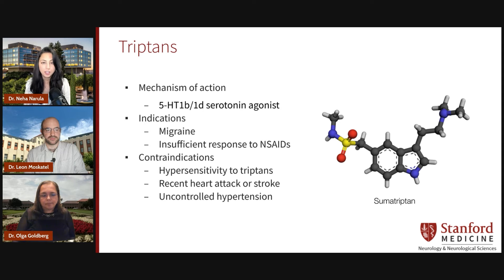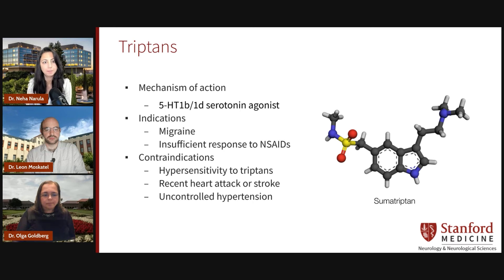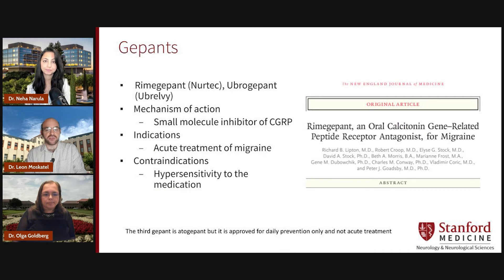That makes total sense. So for patients in these groups, what do you recommend that we do or prescribe? Instead of triptans, there are newer classes of medications that work through a different mechanism that we can use in these situations. These other treatment options are the G-Pant class of medications, Lasmitidan, and external devices. The G-Pants are small molecule inhibitors of calcitonin gene-related peptide that arrived on the market beginning in 2019. There are currently three options with near-equivalent efficacy: Rimegepant, Ubrogepant, and the recently approved Atogepant. They can be very helpful options for patients to treat an acute migraine, and like triptans, are best taken at the onset of the headache.